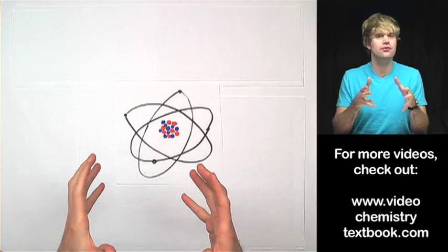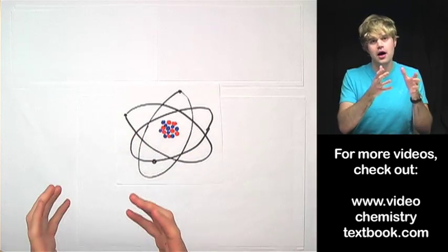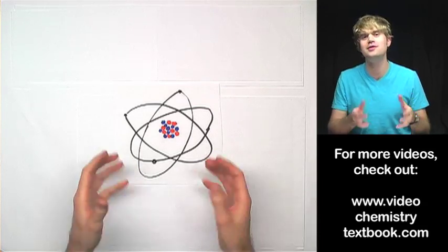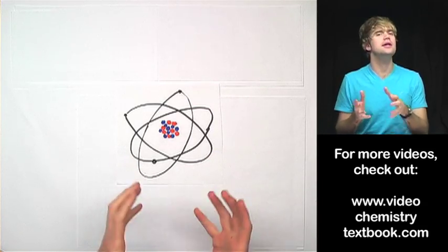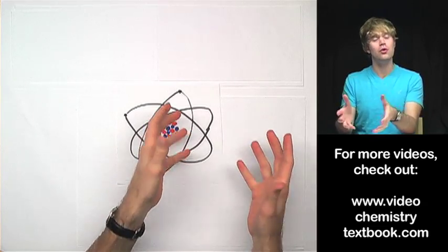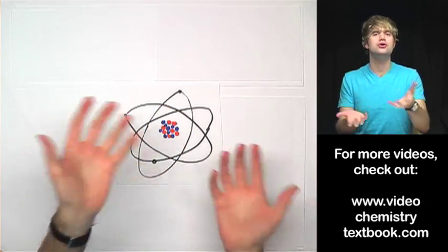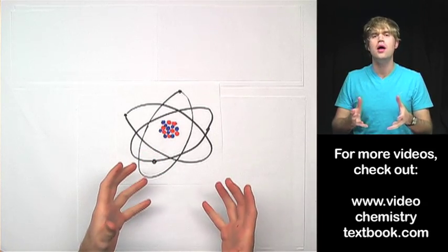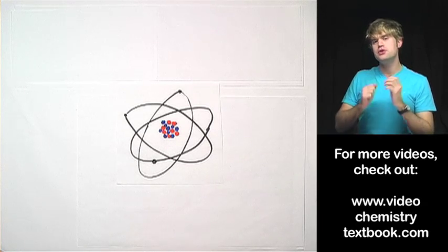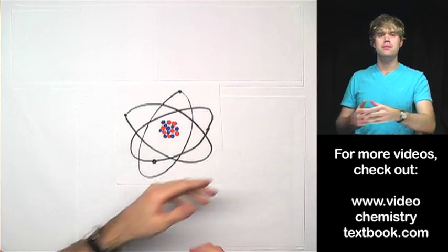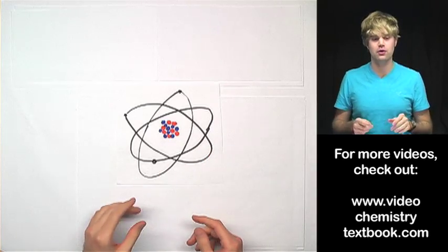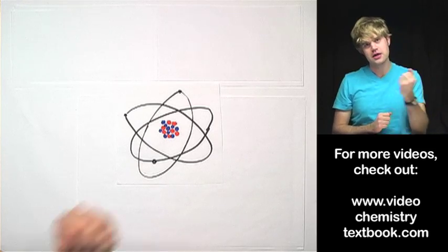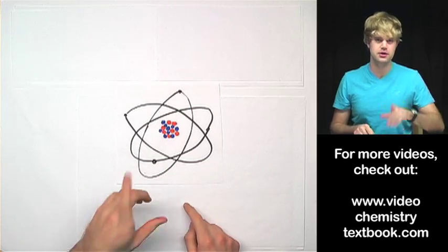Electron capture is kind of like the forms of decay that we've already looked at: alpha decay, beta decay, and positron decay. It's like these guys because it helps unhappy or unstable atoms deal with issues that they have and helps them become happier or more stable by changing the number of protons and neutrons in the nucleus. But it's different than these forms of decay because for all those other forms of decay, there's an important part where they spit something out, maybe an alpha particle or a beta particle. With electron decay, it's more about pulling things in and less about spitting things out of the nucleus.